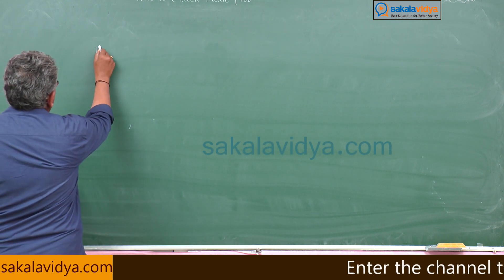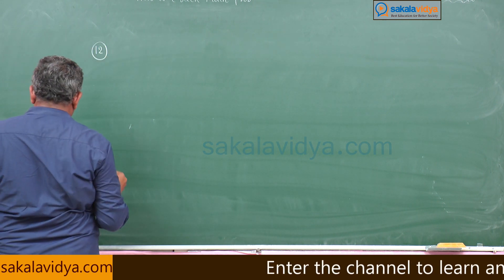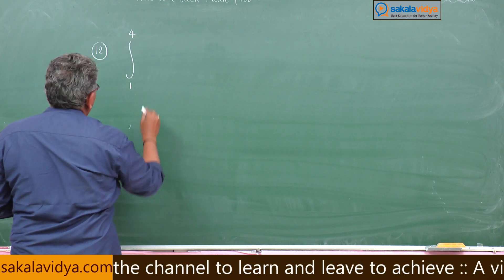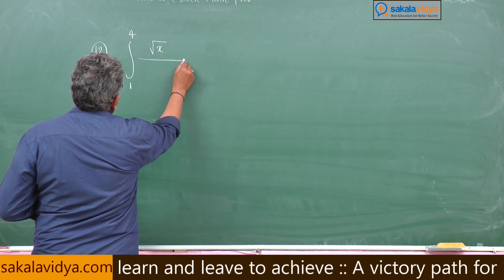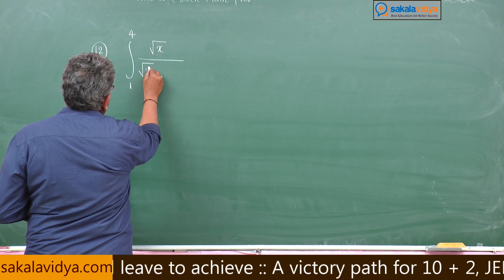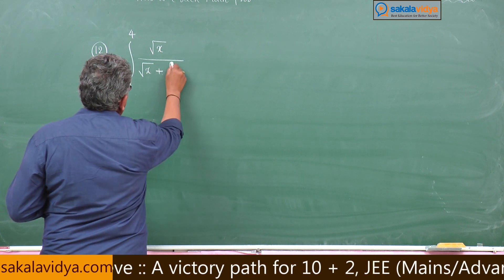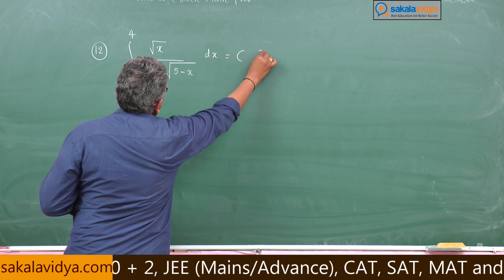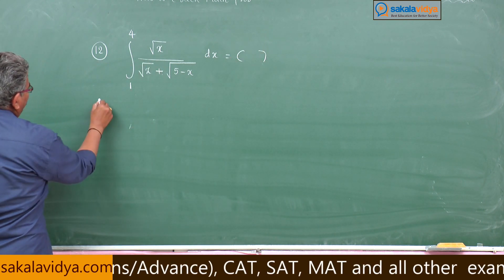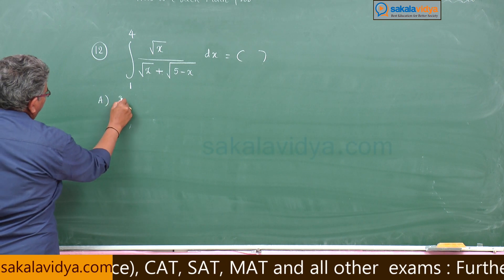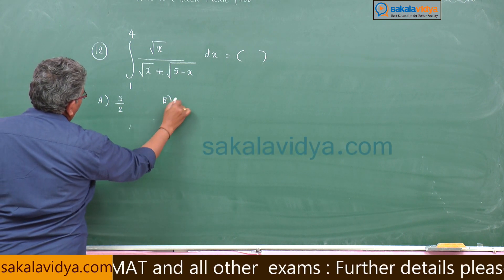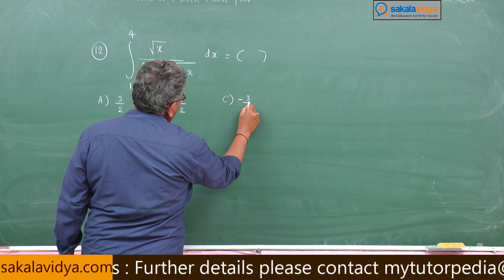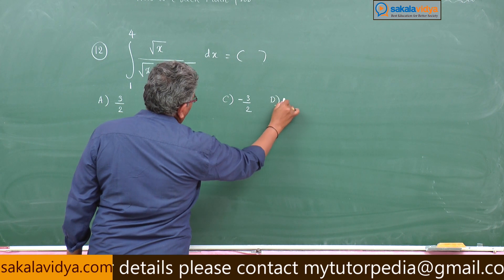12th question: integral from 1 to 4 of root x by root x plus root of phi minus x dx is equal to - option a: 3 by 2, option b: 5 by 2, option c: minus 3 by 2, option d: minus 5 by 2.